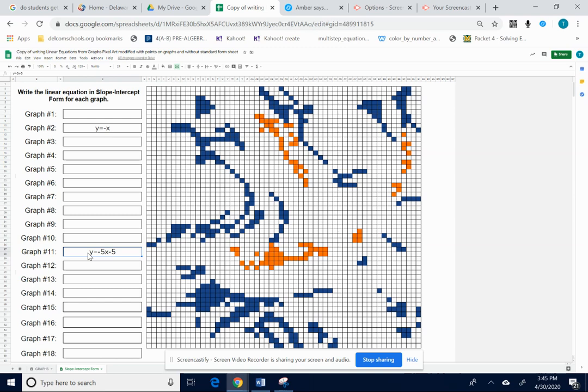And see, now I have the orange part of my graph. So this is what you want to do. You want to go back and forth. You want to find the equation of the graph in as simplest form as you can.